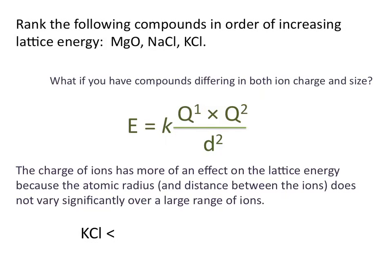Potassium chloride will have the lowest lattice energy because both potassium chloride and sodium chloride are composed of ions having charges of plus 1 and minus 1. The only difference between them is the presence of either the sodium or the potassium ion. Because the potassium ion is larger than the sodium ion, potassium chloride will have the lower lattice energy of the two. When comparing sodium chloride and magnesium oxide: sodium chloride has ions with charges of plus 1 and minus 1, while magnesium oxide has ions with charges of plus 2 and minus 2, since magnesium is in group 2 and oxygen is in group 6. Therefore, magnesium oxide will have the greatest lattice energy.